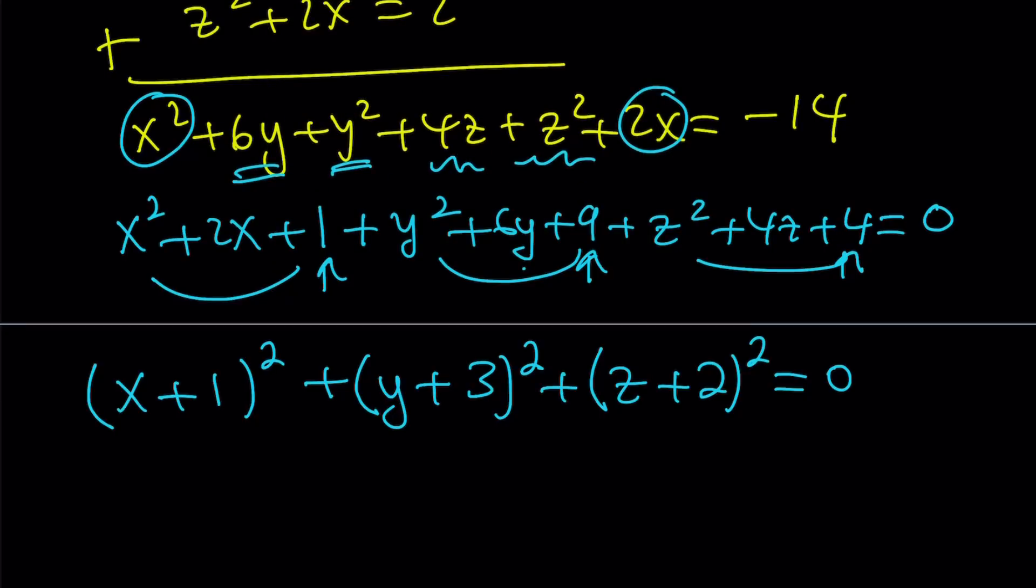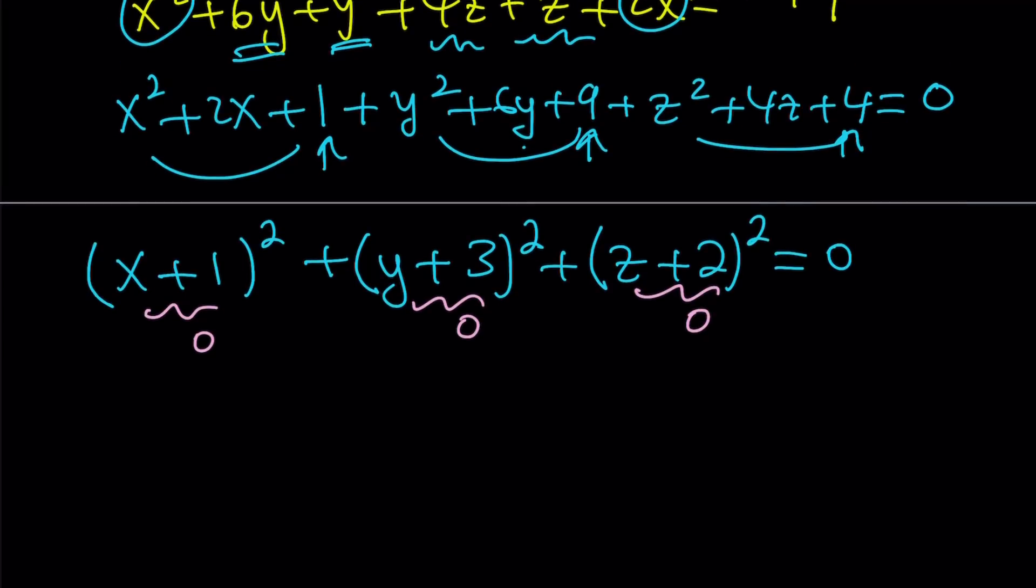And that gives us a really cool thing. One equation, three variables, and we get a solution. And we're not looking for integer solutions, but real solutions. Remember that? So set it equal to 0, set it equal to 0, set it equal to 0. That's the only possibility with real numbers. So from here, we get x equals negative 1, y equals negative 3, and z equals negative 2 as before.